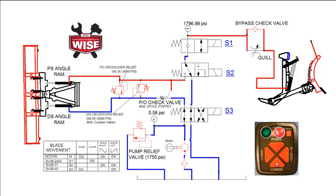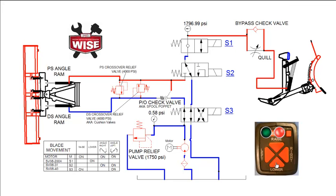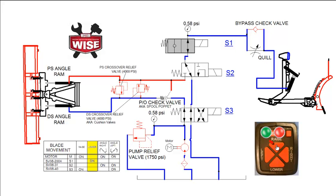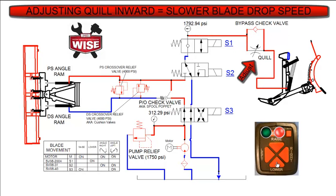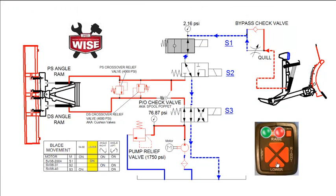Flow control valves, such as the quill, are used to regulate the volume of oil supplied to different areas of the hydraulic system. Restricting the flow builds added resistance to the circuit, increasing pressure. The quill is an adjustable, non-compensated valve that we use to control the drop rate speed of the snowplow blade. In this example, the snowplow blade is already fully raised. Pushing the lower button highlights the typical amount of time it takes to drop the blade. We will raise the plow blade again fully and adjust the setting of the quill. By adjusting the quill inward, we can restrict the flow in the lower circuit, slowing down the drop rate of the snowplow blade.